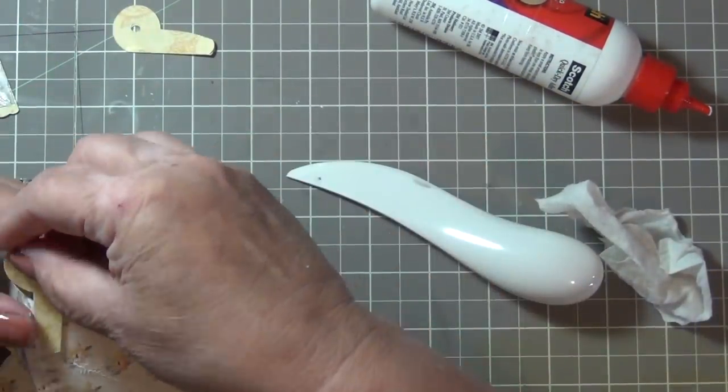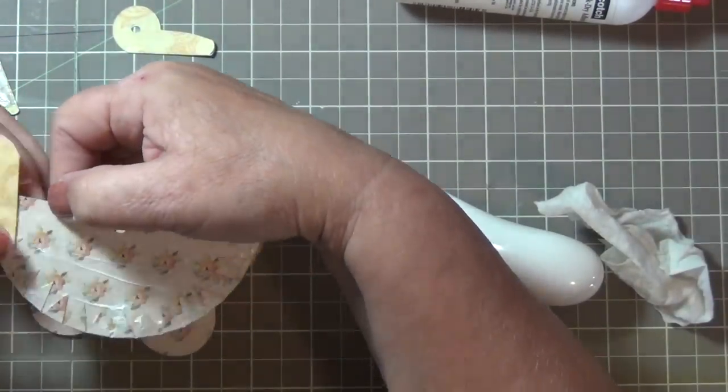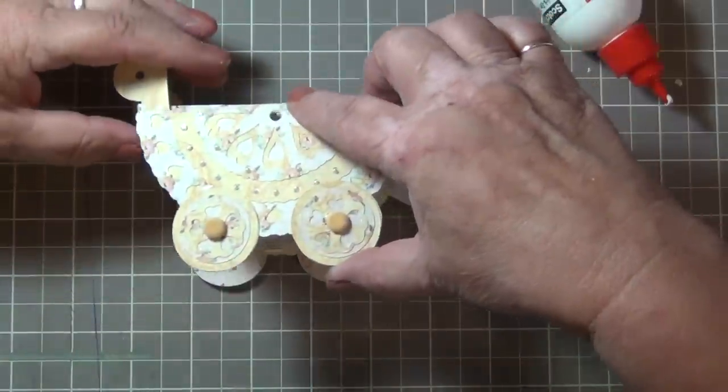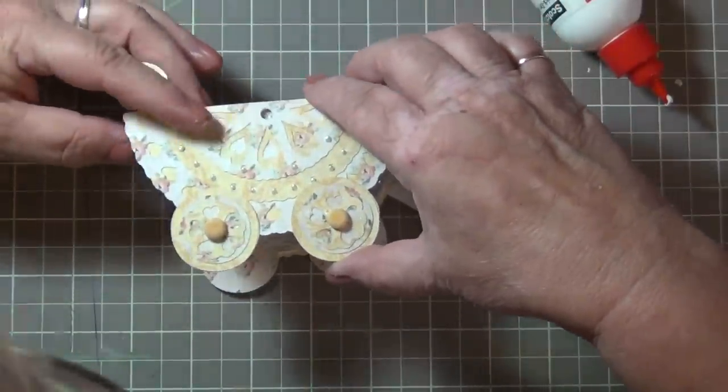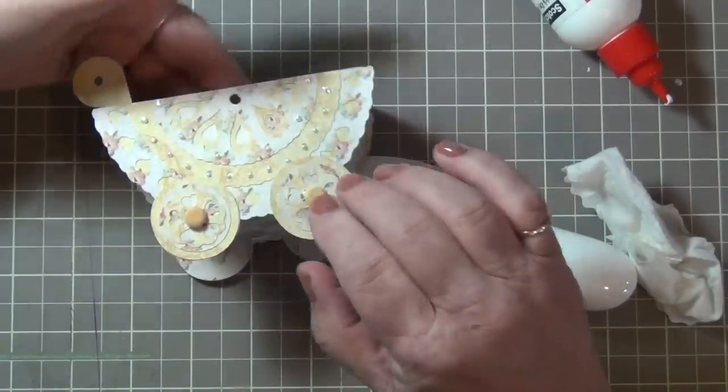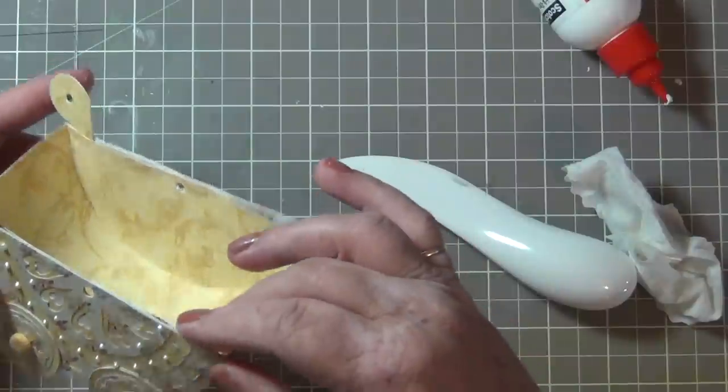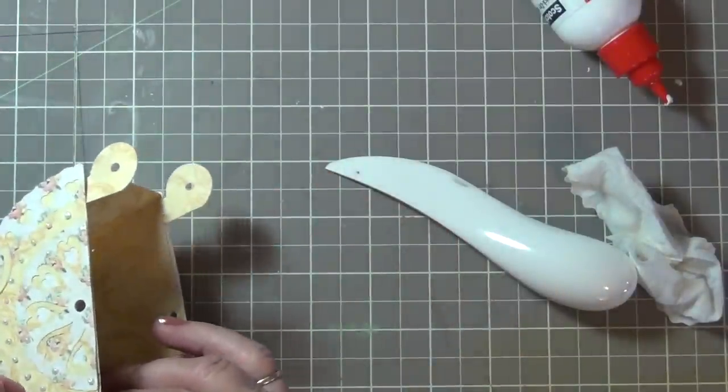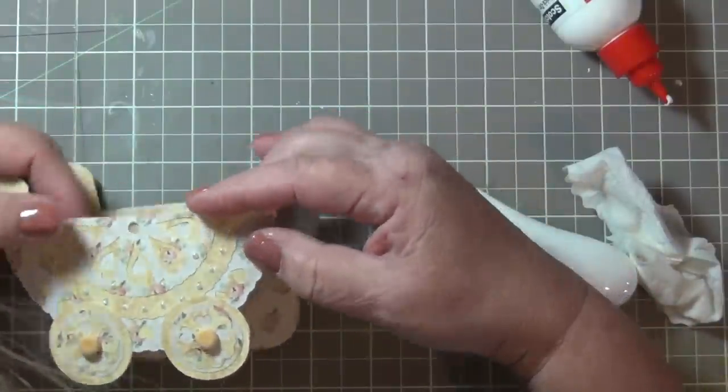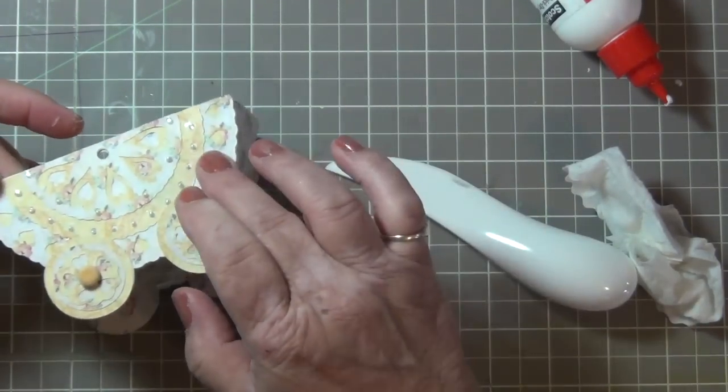Now I glue these on the outside of the cradle so that it will have a nice finished look on the inside. And now attaching the side of the buggy, aligning up those center holes again. So you can see that using the ATG adhesive isn't a bad idea for assembling the cradle because it's getting glued down again. It's coming together quite nicely.